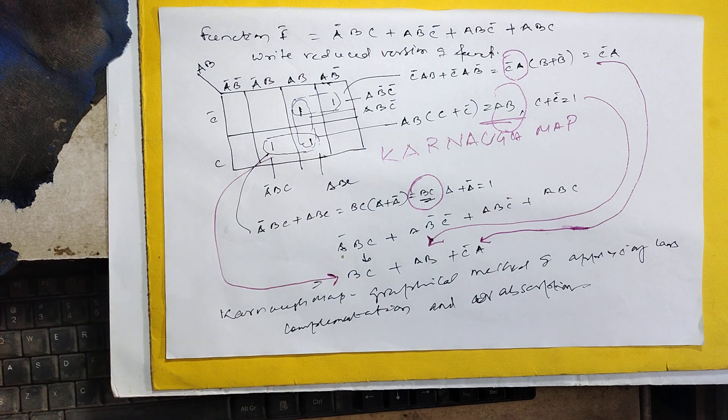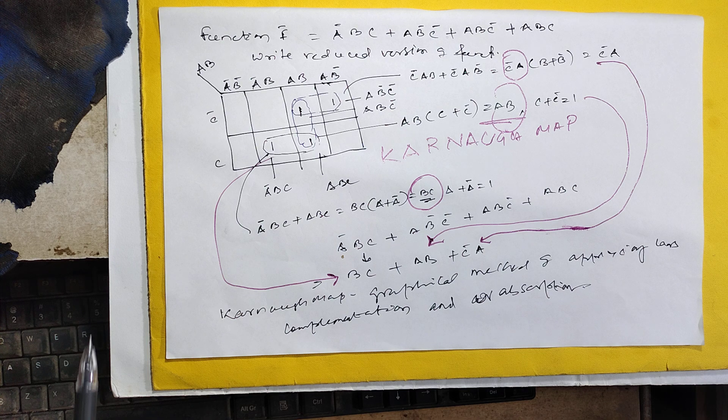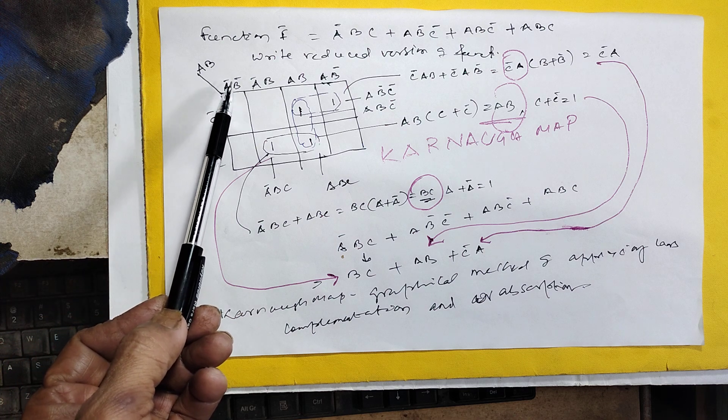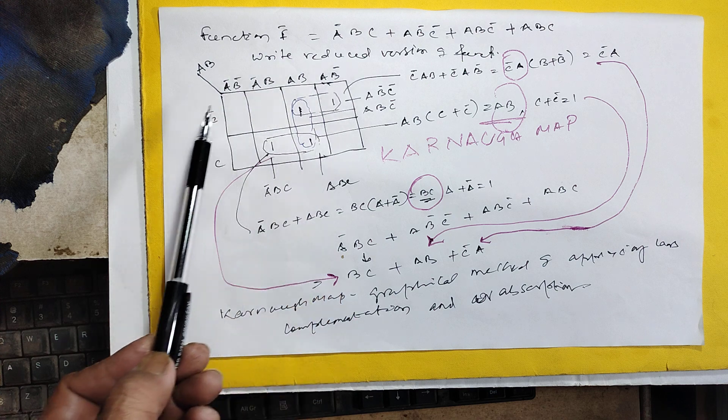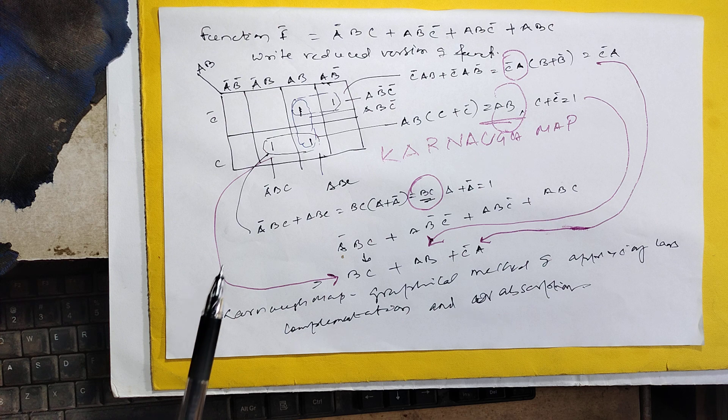So how to arrange it? Go to the map. Here this is a'b', this is a'b, this is ab, this is ab'. This is c', c.